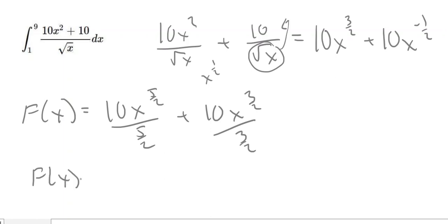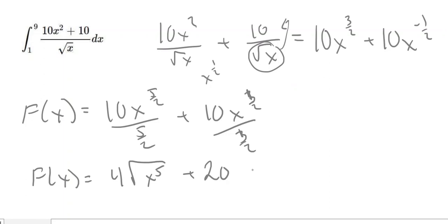That will become 4X to the 5/2, or 4 times the square root of X to the 5th. Then 10 divided by 1/2 is 20. I made an error — negative 1/2 plus 1 is 1/2, so this becomes 20 times the square root of X. We want to evaluate that from 1 to 9.